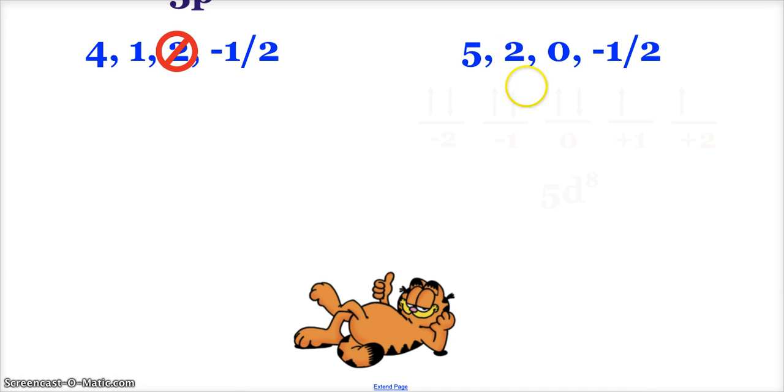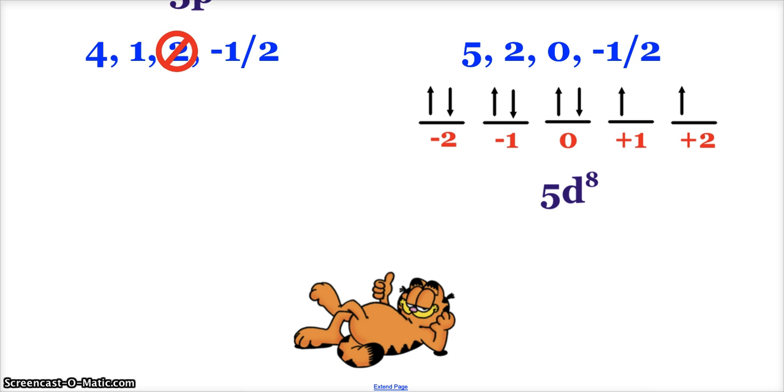5th energy level, 2 stands for D. And D, there's 5 orbitals, and I number them negative 2 through positive 2. So this electron is in here, in the 0, on this orbital. Negative 1 half means it's the second electron in there. So I have to put 1 in each: 1, 2, 3, 4, 5. Then I come back, double, double, and then this is representing a 5D8 situation. If it had been a positive 1 half, I would have only had this electron, this electron, and this electron. Negative 1 half means it's the second electron in that orbital.